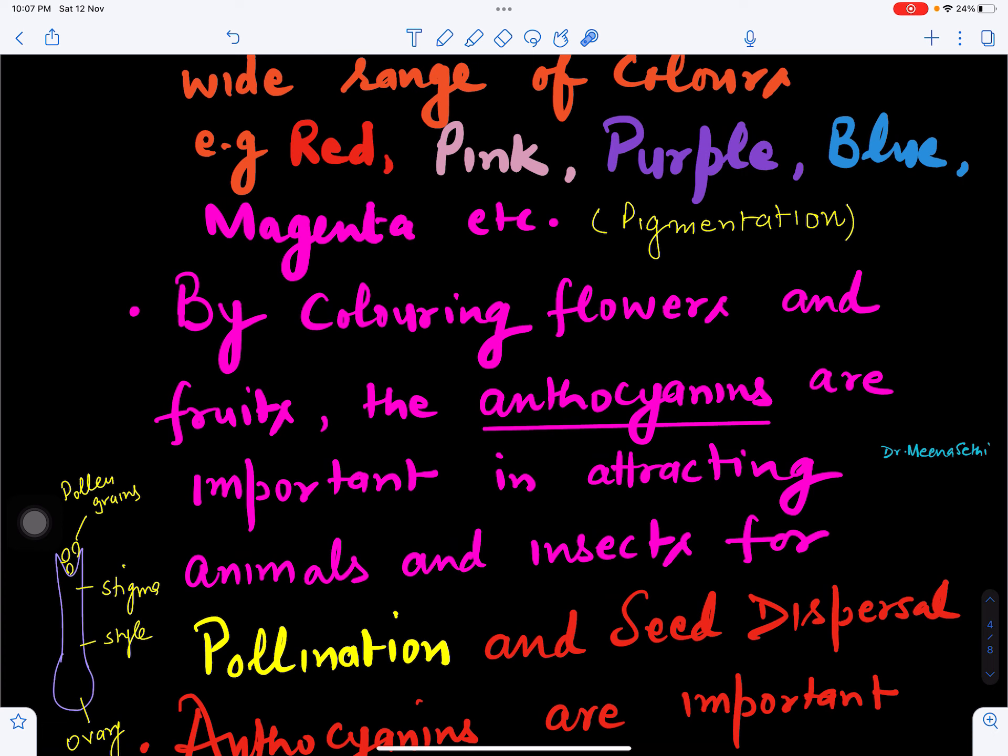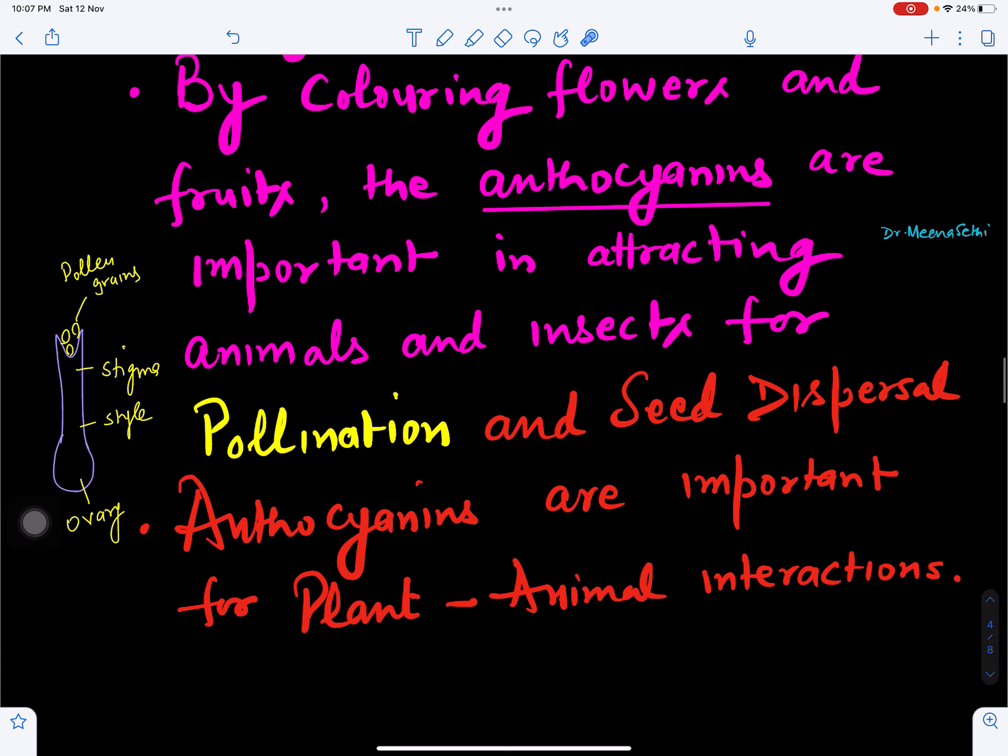Anthocyanins, because they give colors to the flower, they make them attracting. So they attract different animals and insects towards them because of the colors. In that way, these colors help anthocyanins help in pollination.